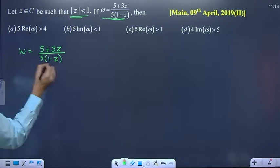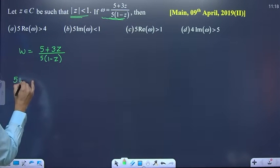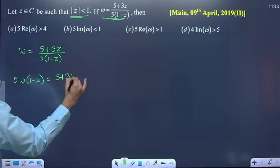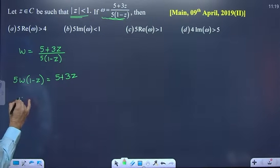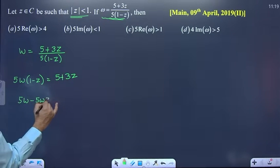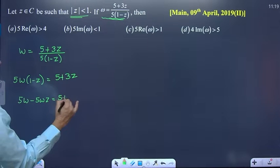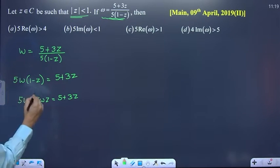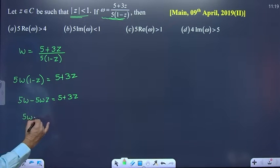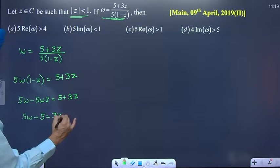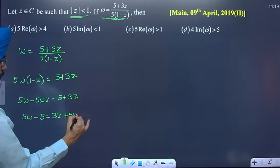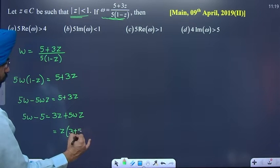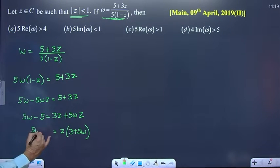To find z, first cross multiply: 5w times (1 minus z) is equal to 5 plus 3z. So 5w minus 5wz is equal to 5 plus 3z. Now shift terms: move z terms to one side, so 5w minus 5 is equal to 3z plus 5wz. Take z common — this side has 3 plus 5w, and this side has 5w minus 5.